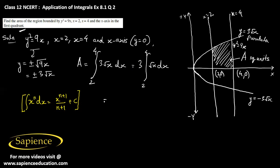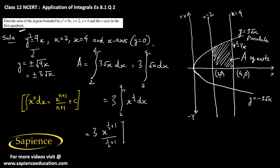So that equals 3 times the integral of x to the power one-half dx, with limits from 2 to 4. Applying the formula, that becomes 3 times x to the power (half plus 1) divided by (half plus 1), evaluated from 2 to 4, which gives 3 times x to the power 3/2 divided by 3/2, from 2 to 4.